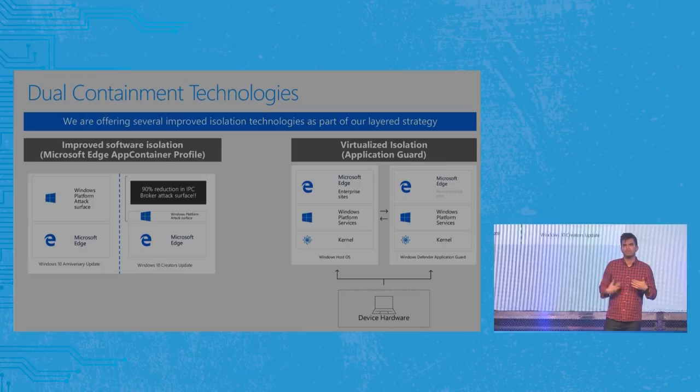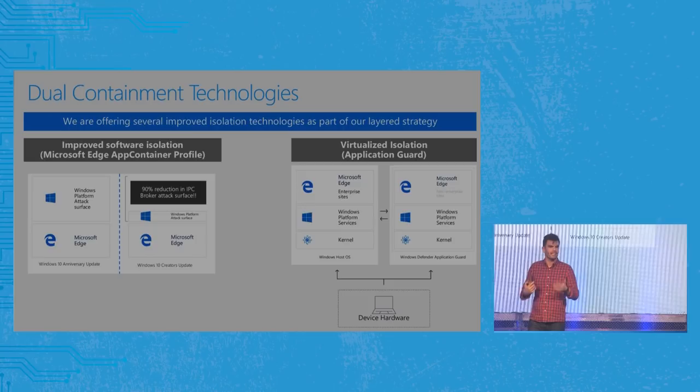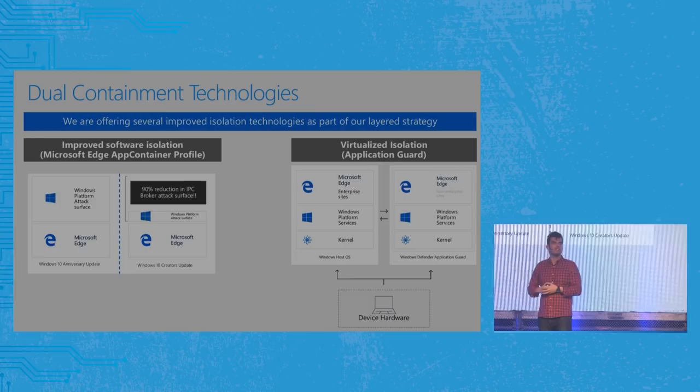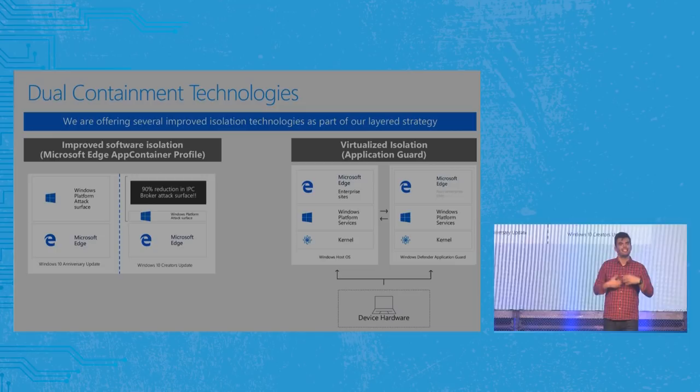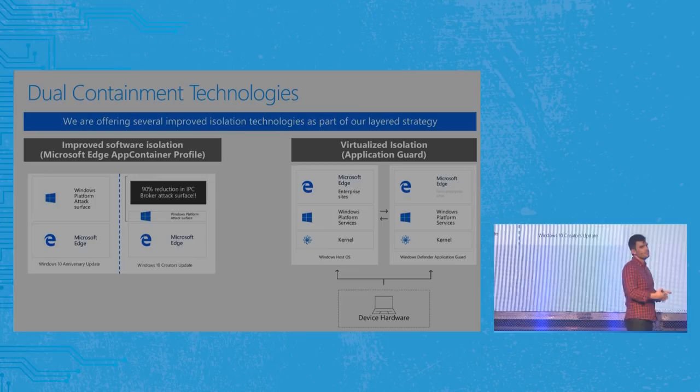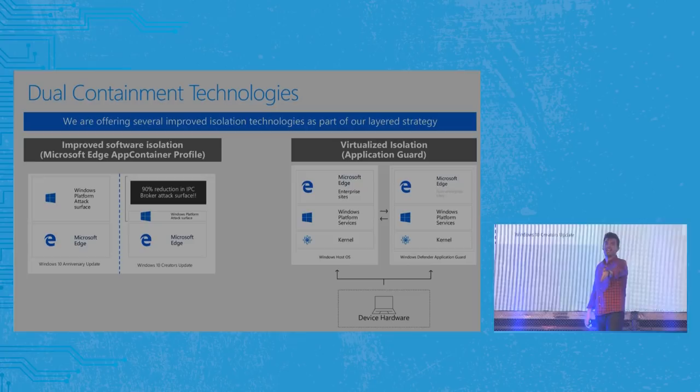We've continually invested in that sandbox and are now down about 90% attack surface from where we started when Microsoft Edge launched. But it has limitations. In the Windows world we've got 20 years of applications that need to continue running, making it very difficult to use strategies like kernel isolation via system call filtering — common on other platforms — because applications still need to access many of those system calls. When we looked at what other platforms were doing to get kernel isolation, we decided that approach wouldn't work for Windows.